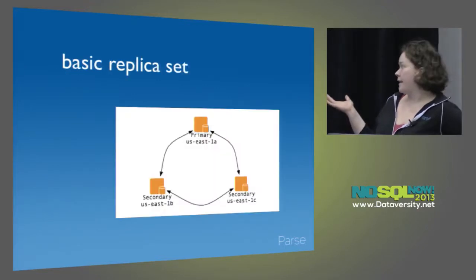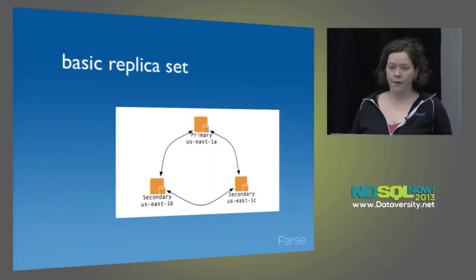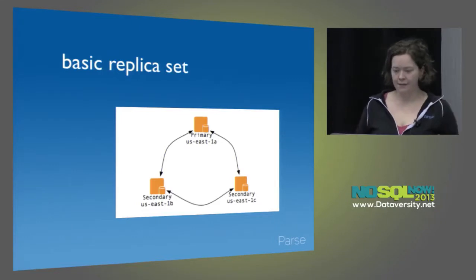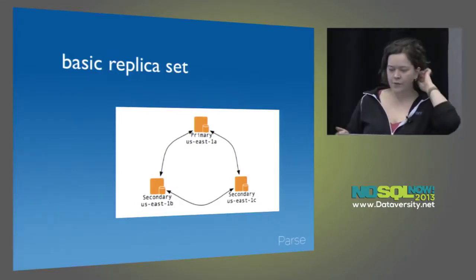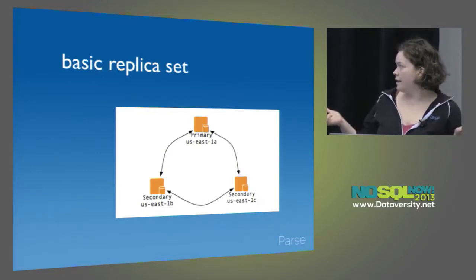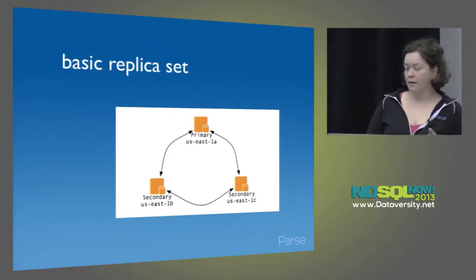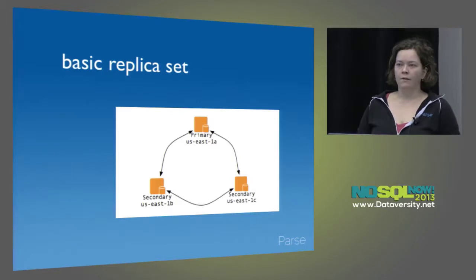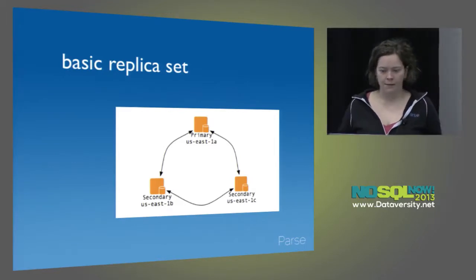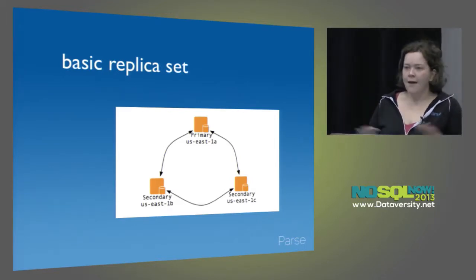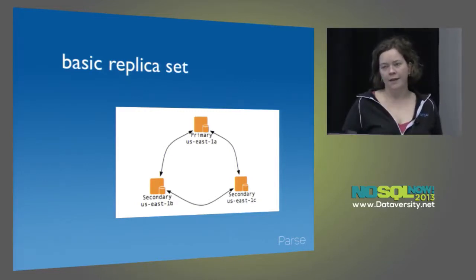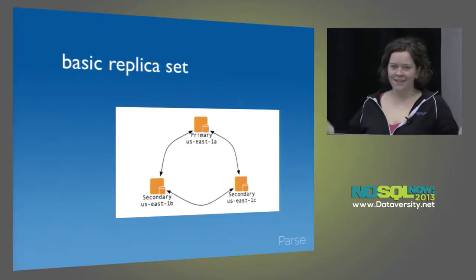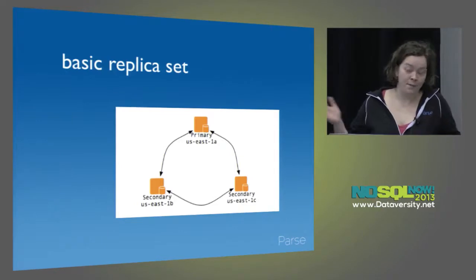Here's your basic replica set — three nodes, so we have an odd number of votes. Each node is in a different availability zone. This replica set is resilient to any single node going down, any availability zone going down, or EBS going down in any availability zone. If any of these nodes or AZs go down, the other two nodes will form a quorum, elect a primary — like magic — and may not even wake you up in the middle of the night.